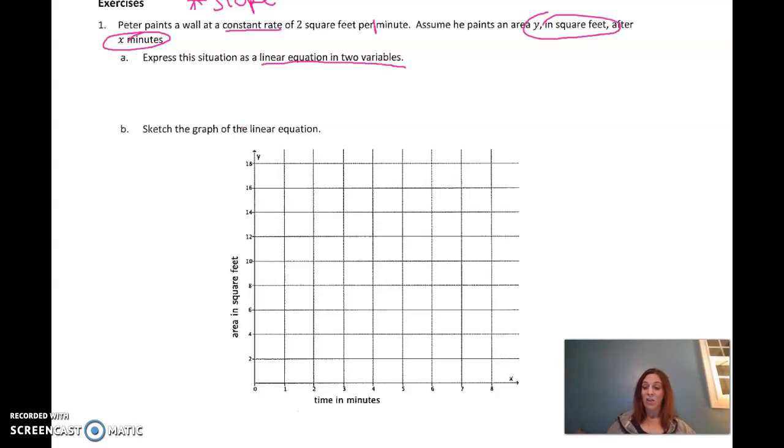Now notice part A here says express the situation as a linear equation in 2 variables. So I want you to think back earlier on when we were writing equations in 2 variables. Take your rate, 2 square feet per 1 minute, and then match that up with y over x, y square feet in x minutes. And then we use cross products and we write our equation. So I can go 1 times y equals 2 times x, or we can just write it as y equals 2x.